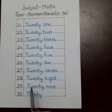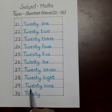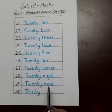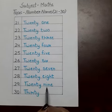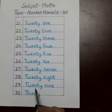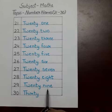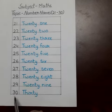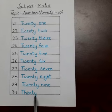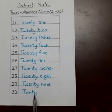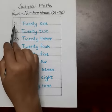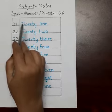29: T-W-E-N-T-Y, 20; N-I-N-E, 9. Twenty-nine. 30: T-H-I-R-T-Y. Thirty. Repeat once more. 21.